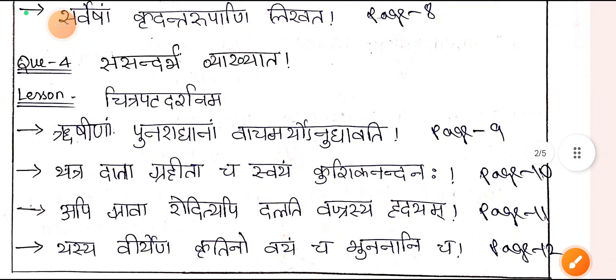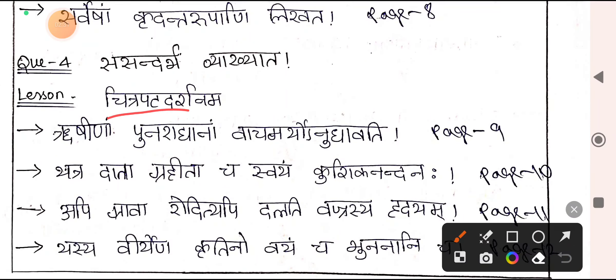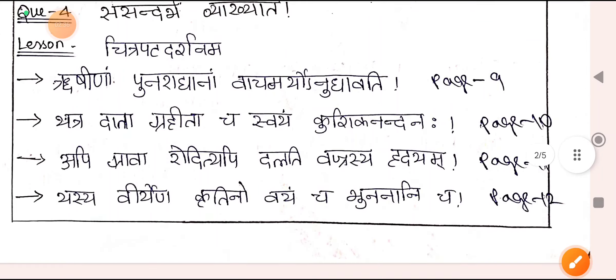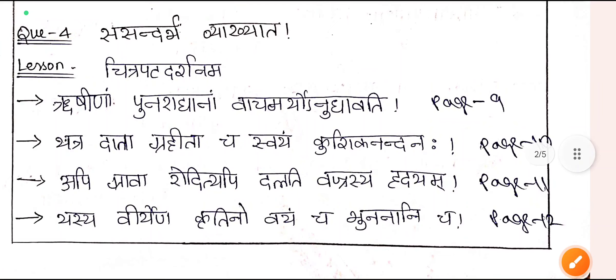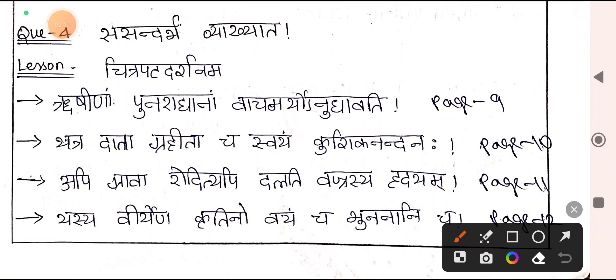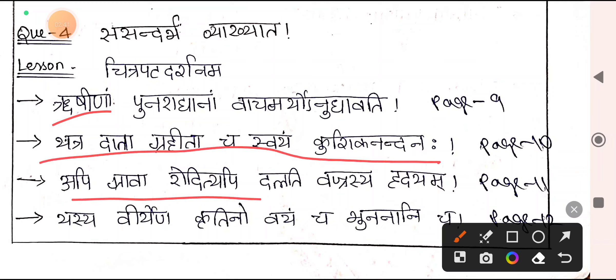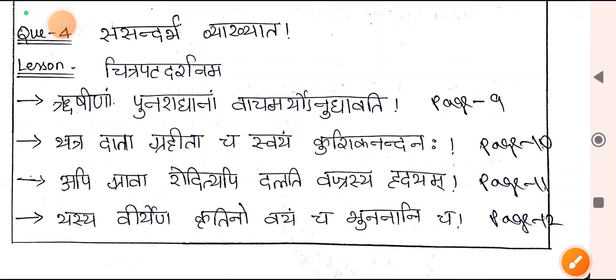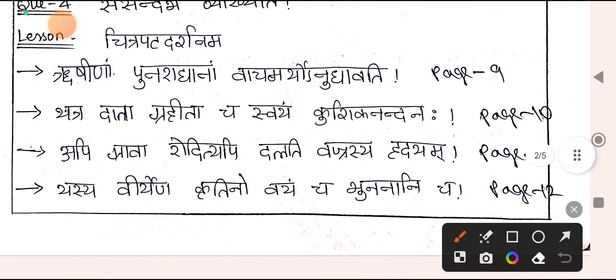Next comes another Sandarbhavavakya question from Chitrapata Darshanam — the story of Rama, Sita and Lakshmana. You write the Sandarbhavavakya along with Kaviparichaya. The Kaviparichaya part — the name of the Kavi, name of the lesson, and name of the resource book — you write these 3 in Devanagari script, and the remaining all in English. This question carries 5 marks.